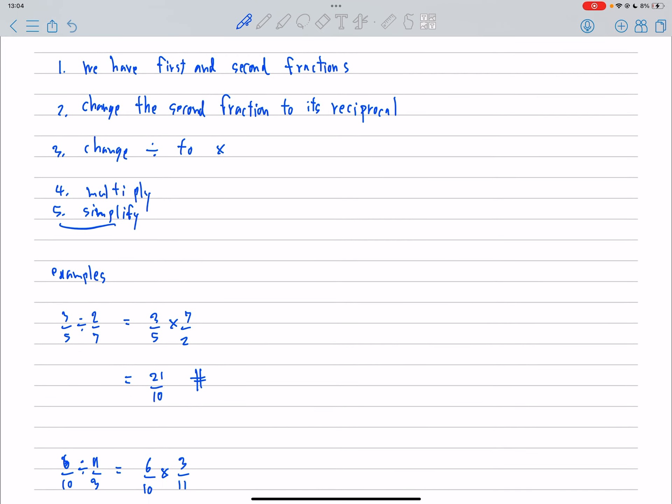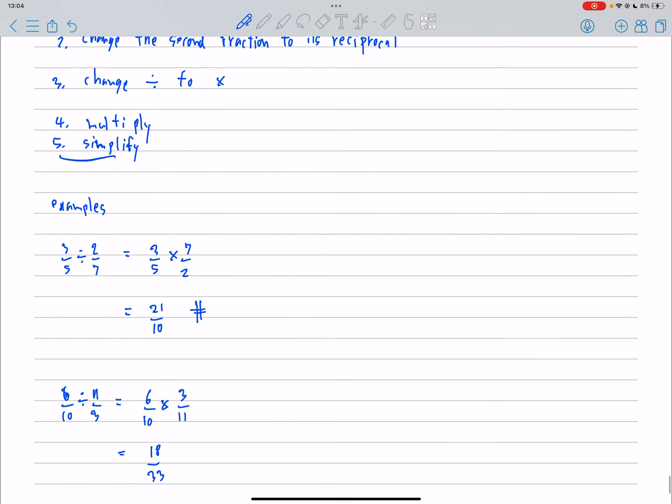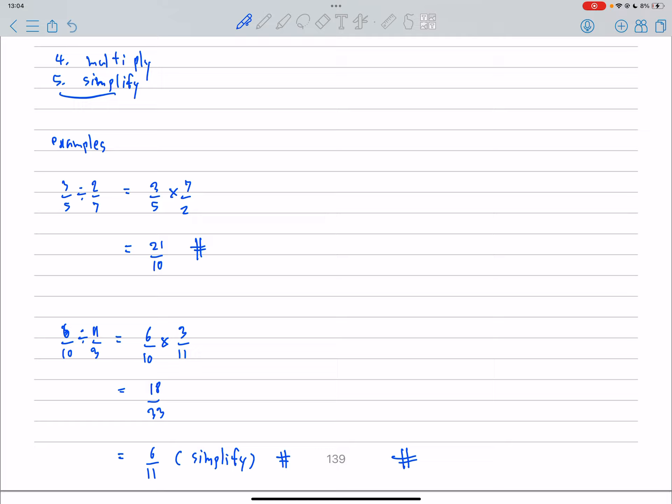And reciprocal of 11 over T is T over 11. So the answer is 18 over 30 T. And we can still simplify this number. So the number is 6 over 11. Thank you.